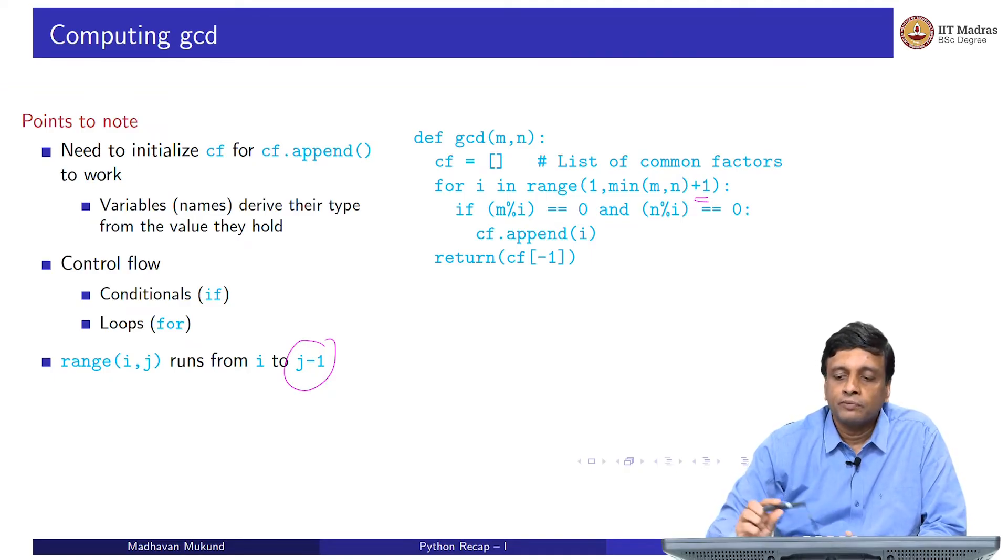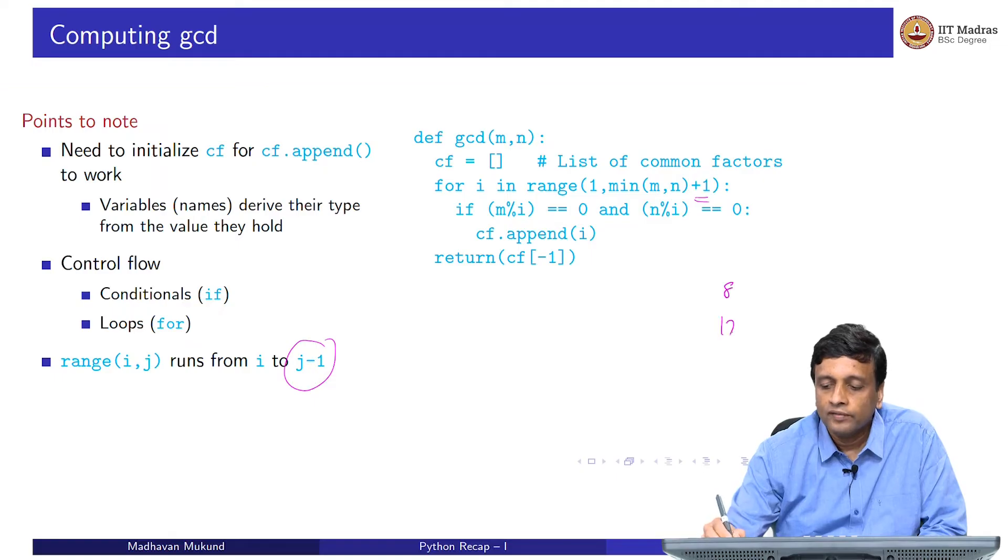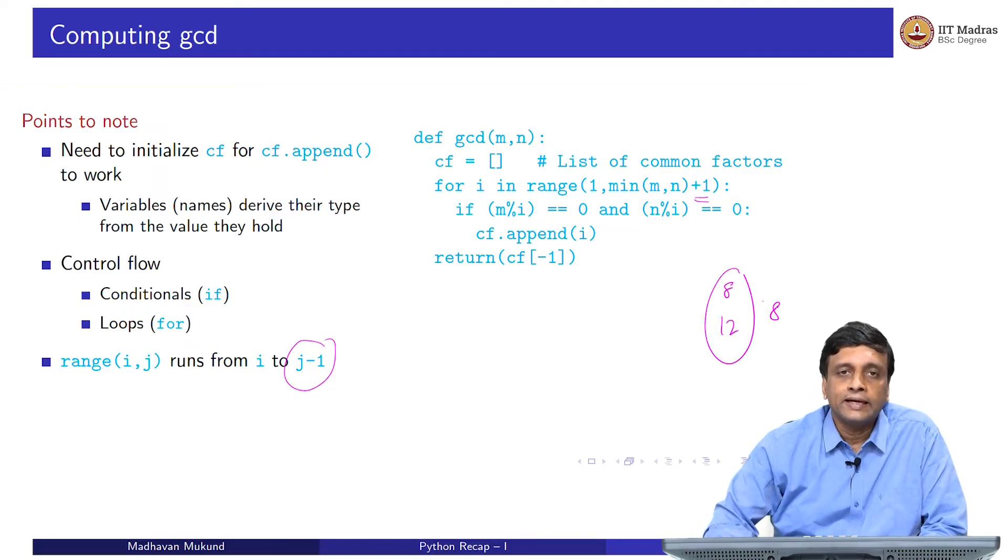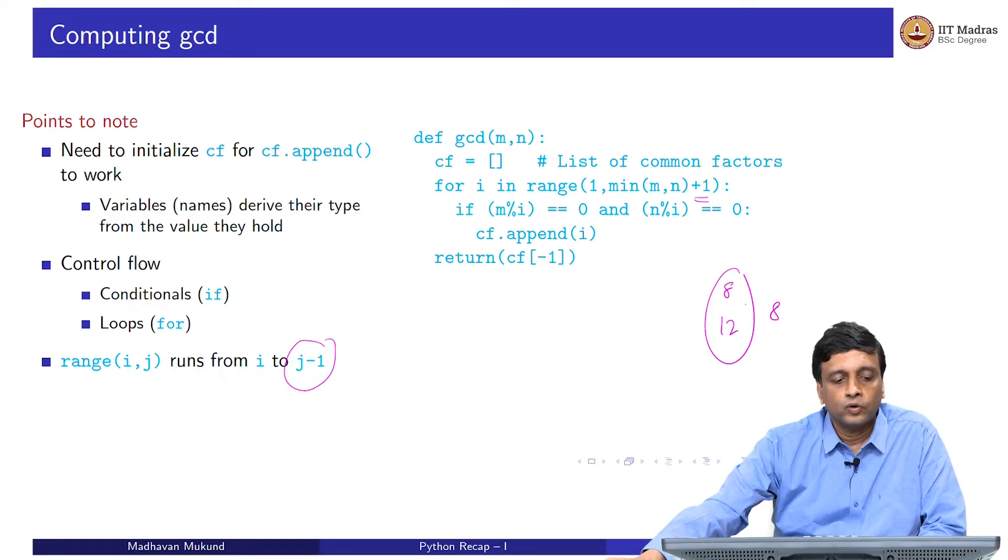For instance, supposing we were looking at 8 and 12, then the minimum of 8 and 12 will be 8. We need to check whether 8 is a factor or not. Otherwise, we do not get the correct GCD. If we stop at the minimum in the range function, then it will only go up to 7. This is why we have to put that plus 1. These are all minor points which I am sure that you are familiar with, but it is worth repeating so that you do not make silly mistakes when you are writing your code.